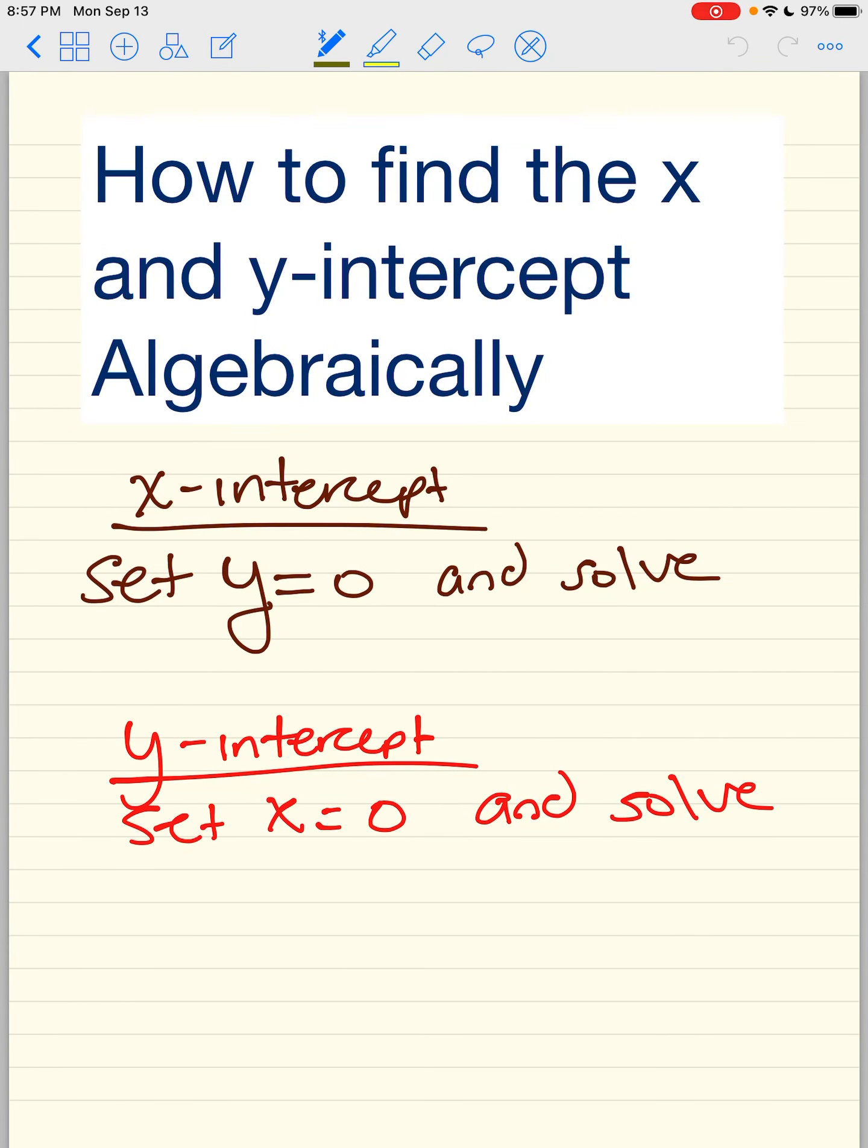So, how do we find the x and y intercept algebraically? For the x intercept, we're going to set the y equal to 0, and we're going to solve. And for the y intercept, we're going to set the x equals 0 and solve. So if you need to take down notes, hit the pause button and take down notes.